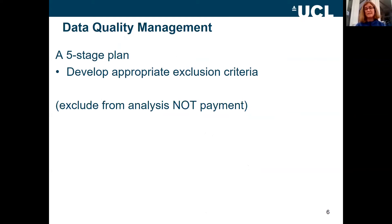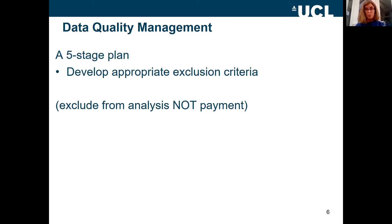Those are two very different decisions. My general plan is quite liberal — I pay anybody who's had a half decent attempt at my experiment; if they've sat there for the half hour or so, they get paid. I then make a separate decision about whether to analyse their data. Keep those two things completely separate — your ethics will have very clear guidance on the payment issue.